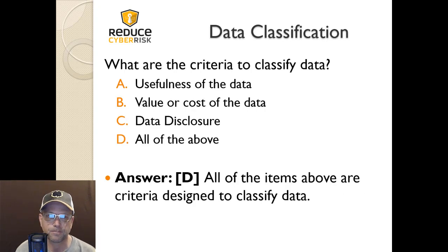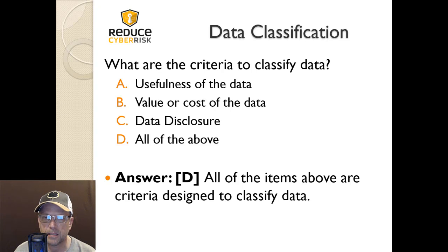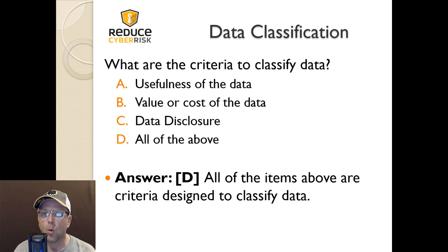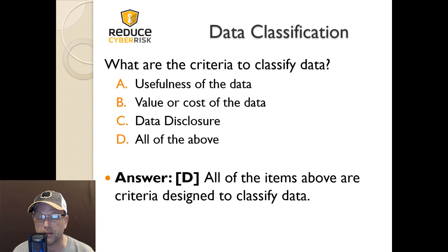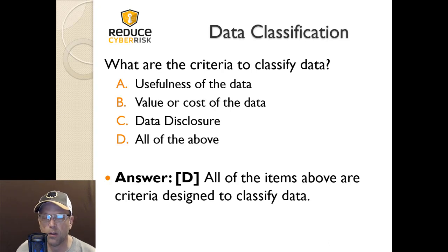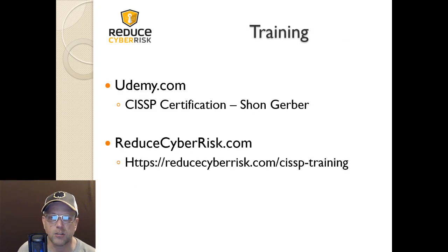Next question: What are the criteria to classify data? A) usefulness of the data, B) value or cost of the data, C) data disclosure, or D) all of the above. The answer is D — all of the above. Every single one of those items is a criterion used to classify specific types of data.